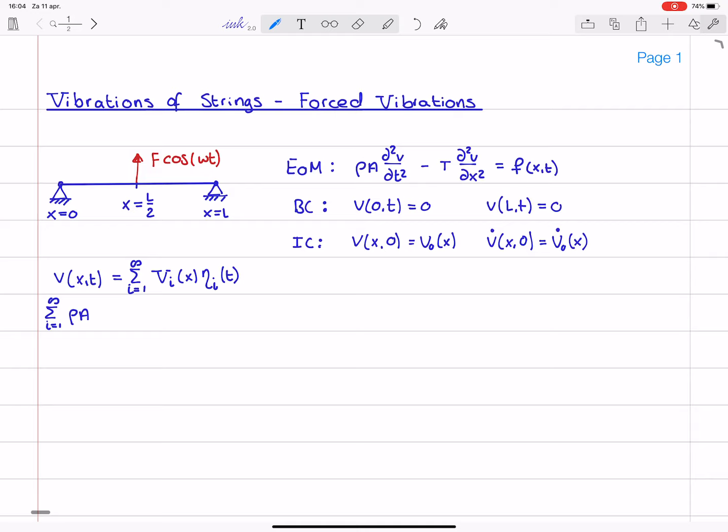So, we start off by an infinite sum of rho a vi times eta i double dot. Then we have an infinite sum of T times vi double prime eta i itself, and in the right hand side we just have this f.